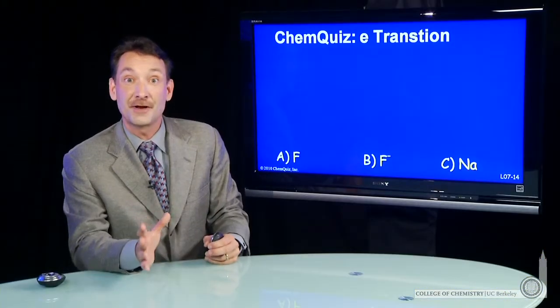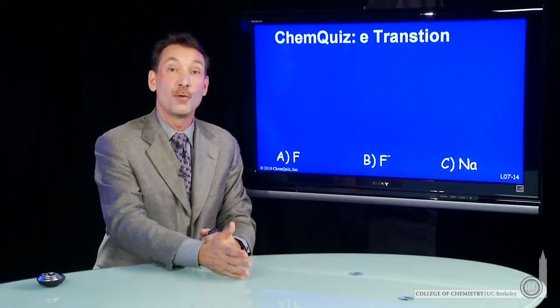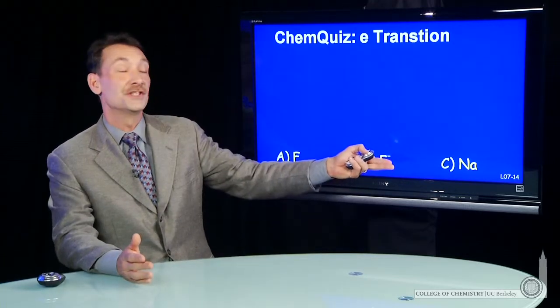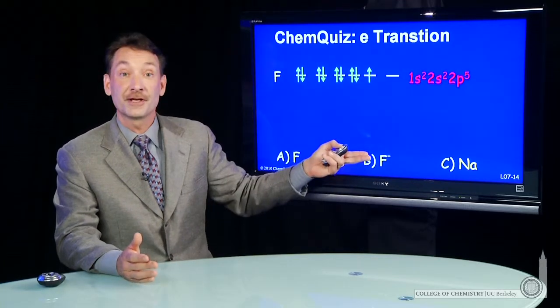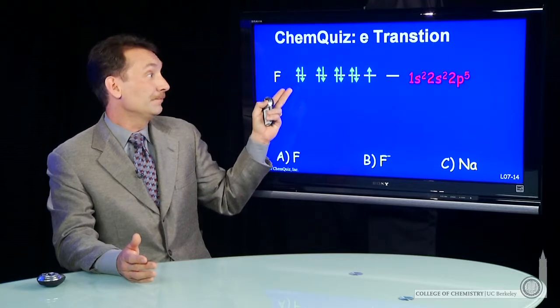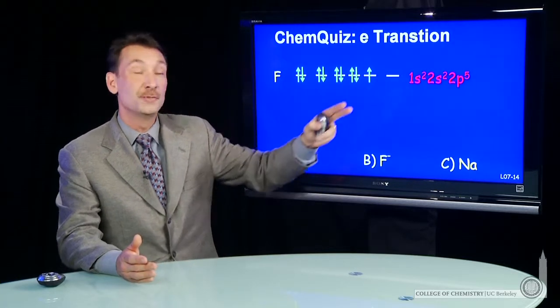We're talking about electronic transitions going from n=1 to n=2. Which of these possible species can do that? Let's look at their electronic configurations. Here's fluorine: 1s²2s²2p⁵.